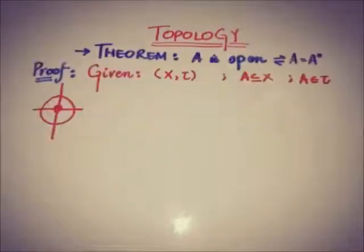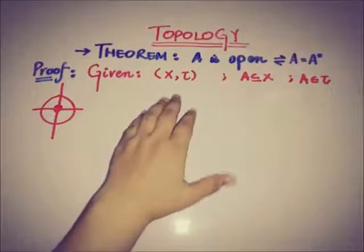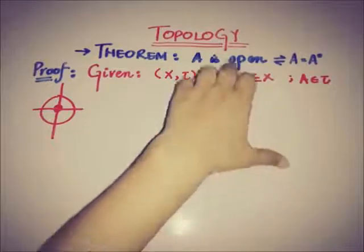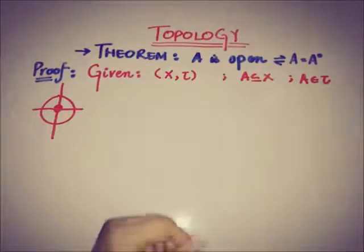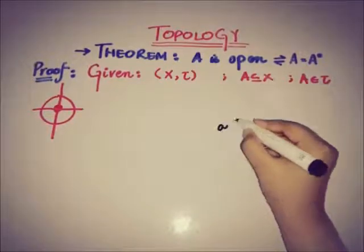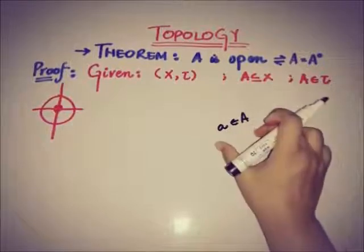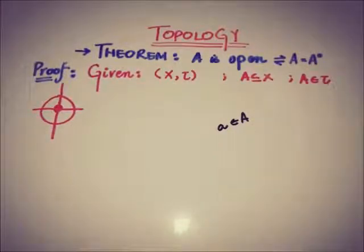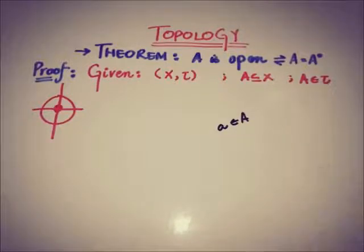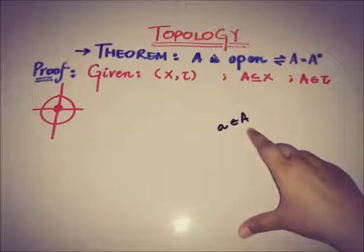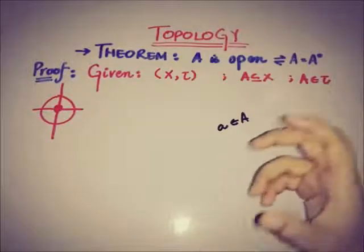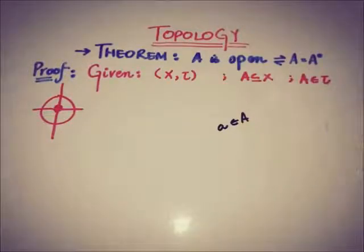Let's prove it. If X and tau is a topological space and A is a subset of X, then A is said to be open if and only if for all a belonging to A, a is an interior point of A — that is, every element of A is an interior point of A itself. In compact notation, we write this as A equals its interior.